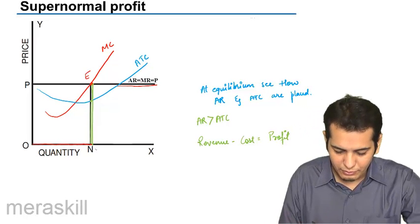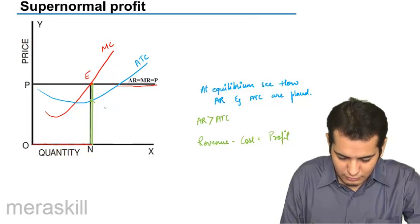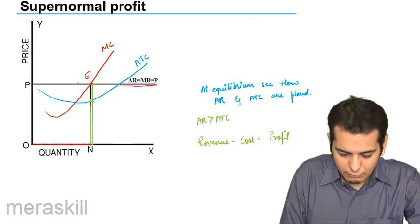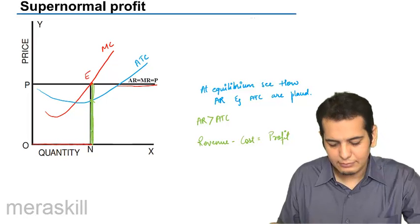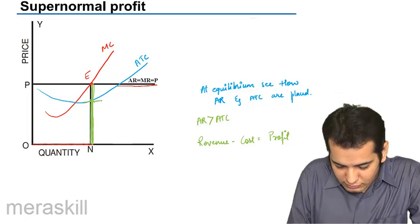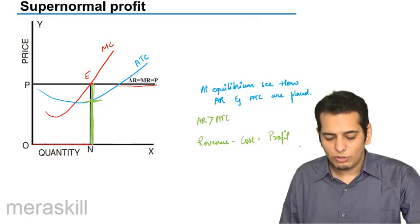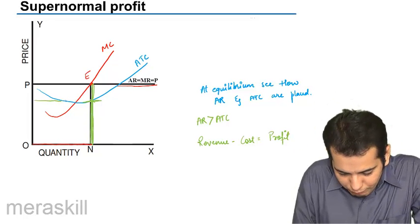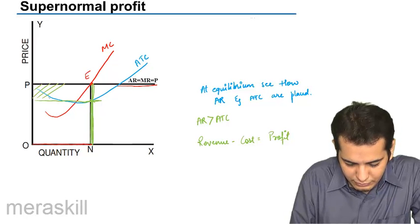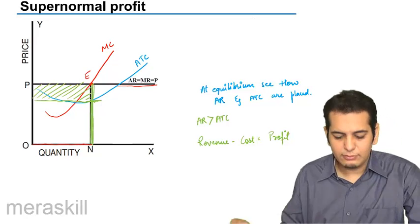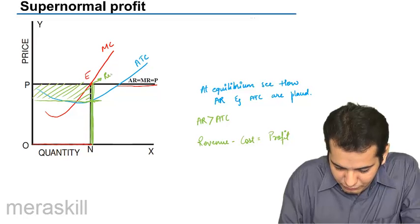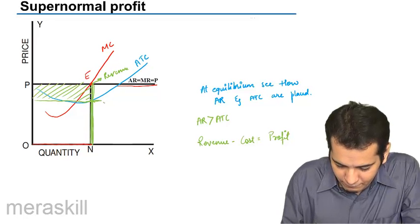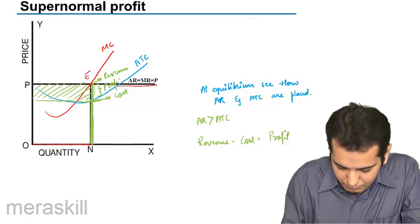So what is the revenue here? My revenue is this much, this whole green line. And what is the cost? My cost is up till here. So what is the quantum of profit? This is the quantum of profit that the firm would be earning because this is my revenue and this is my cost. So this becomes my profit.